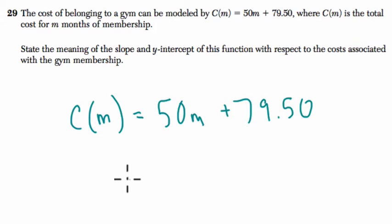Where C of m is the total cost, so telling you what that is, it's the total cost. State the meaning of the slope and the y-intercept of this function with respect to the cost associated with gym membership.